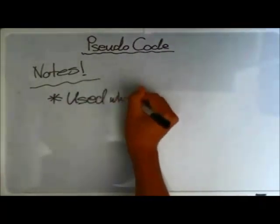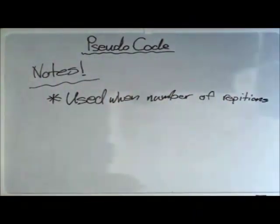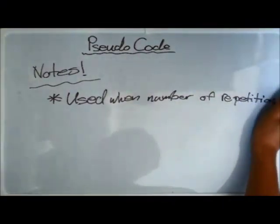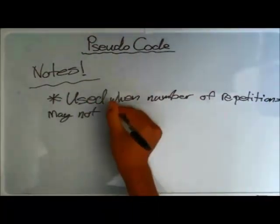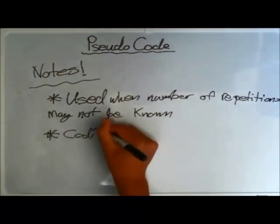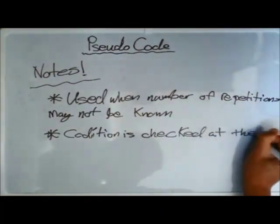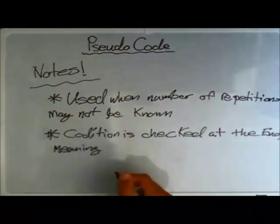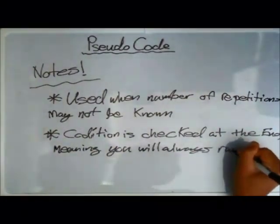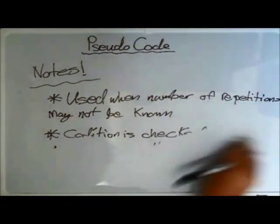The REPEAT UNTIL loop is used when the number of repetitions isn't known — when you do not know how many times you want to go through the loop. The condition is checked at the end of the code, meaning you will always go through the loop at least once.